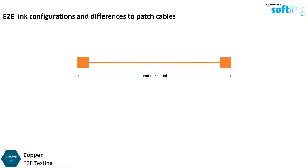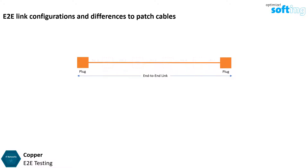The simplest end-to-end link comprises one piece of cable that has plugs on both sides, and can also consist of several segments. The simplest configuration looks like a patch cord but with additional specifications which makes it different from a patch cable. For example, an end-to-end link has different performance criteria to a patch cable.